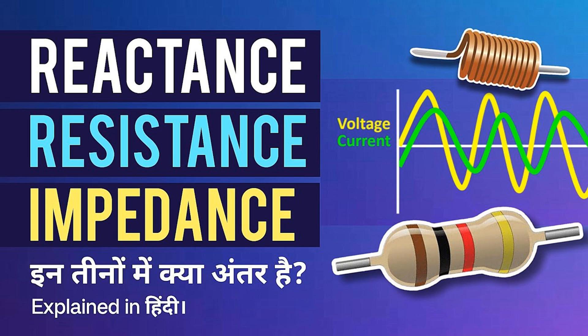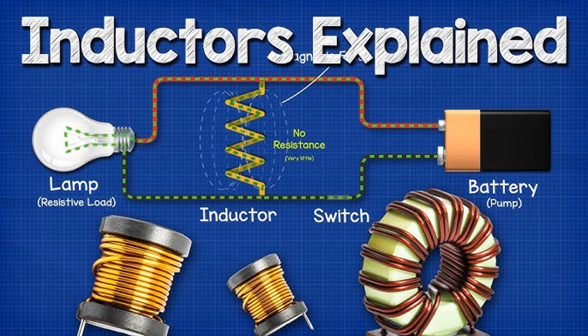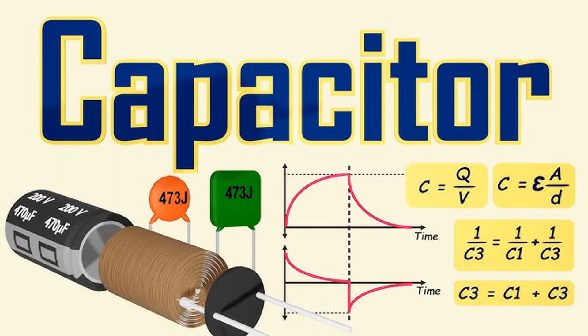Impedance, Z, being a comprehensive measure of the total opposition to the flow of alternating current in a circuit, finds numerous applications in electrical engineering and related fields. Audio systems: impedance matching is crucial in audio systems to ensure maximum power transfer between audio sources, such as microphones and instruments, and amplifiers, or between amplifiers and speakers. Proper impedance matching minimizes signal loss and distortion, improving the overall sound quality. Antenna design: impedance matching is essential in radio frequency, RF, systems and antenna design to optimize signal transmission and reception. Matching the impedance of the transmitter or receiver to that of the antenna ensures efficient transfer of RF energy, maximizing the range and performance of wireless communication systems.